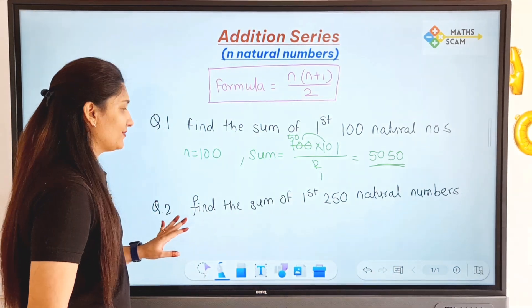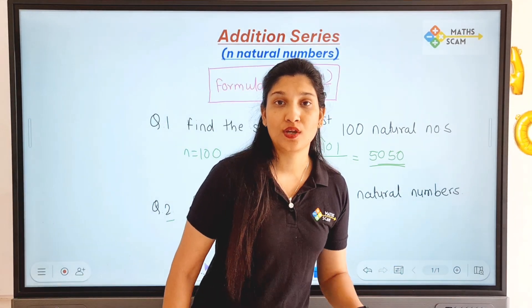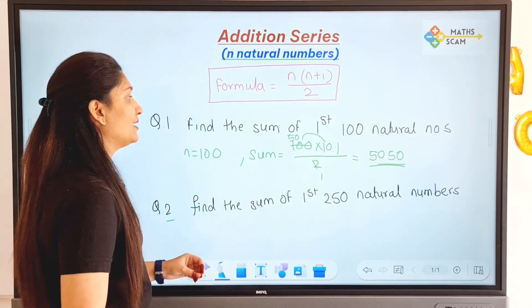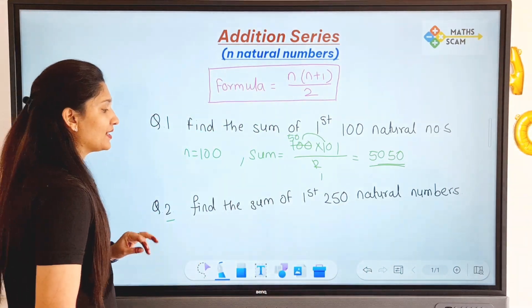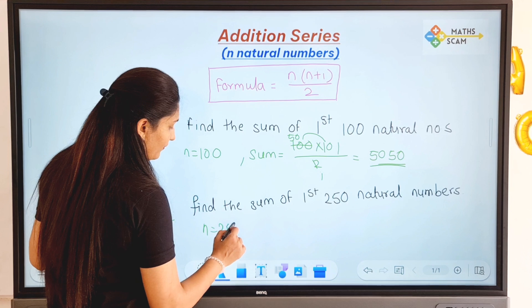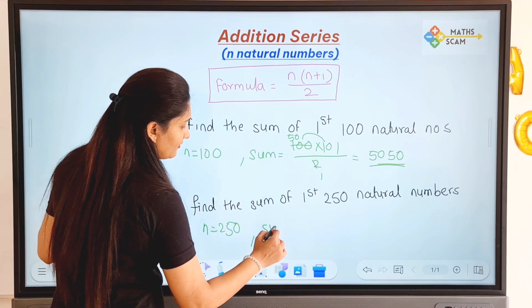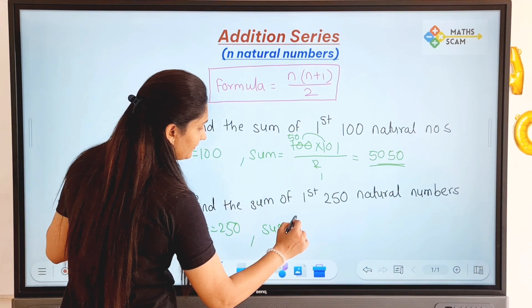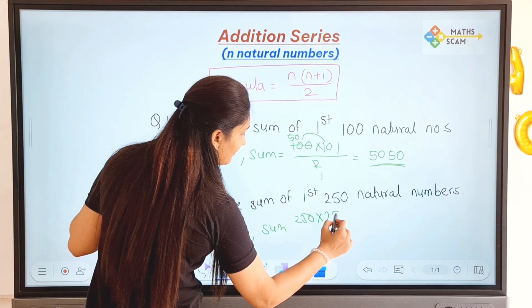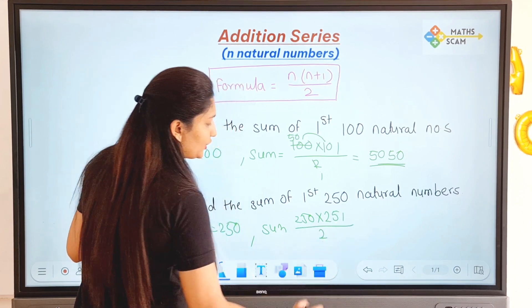The next question is: find the sum of first 250 natural numbers. Here n is 250, so the sum will be 250 times 251 divided by 2.